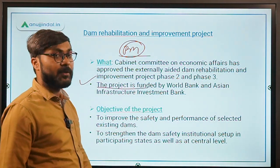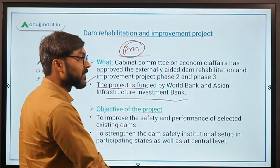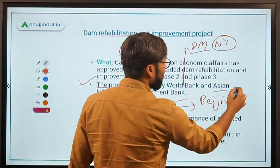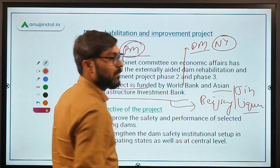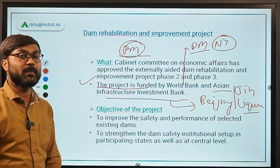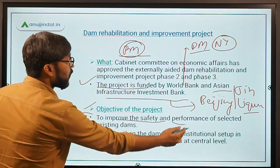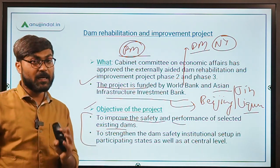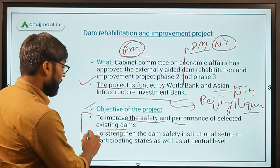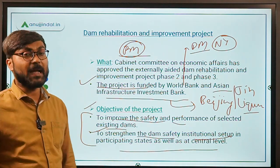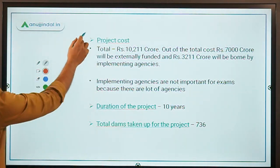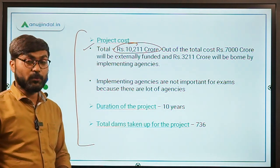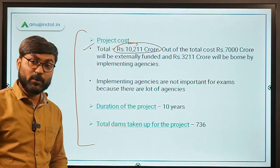The Cabinet Committee on Economic Affairs, headed by the Prime Minister of India, has approved the Dam Rehabilitation and Improvement Project Phase 2 and Phase 3. This project is funded by two international banks: the World Bank and the Asian Infrastructure Investment Bank (AIIB). The World Bank is headed by David Malpass and is headquartered in New York, while the AIIB is headquartered in Beijing and is headed by President Jin Liqun. The objective is to improve the safety and performance of selected existing dams — no new dams will be constructed. Only existing dams will be rehabilitated. The total project cost is ₹10,211 crore, out of which ₹7,000 crore will be provided by the World Bank and AIIB, and the rest by implementing agencies.